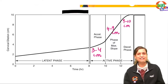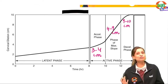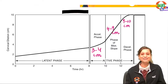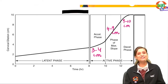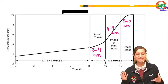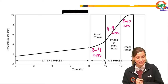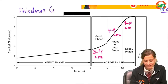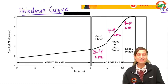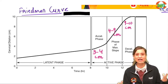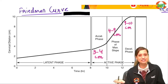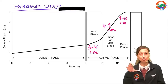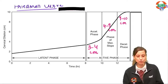I would appreciate if you write these concepts simultaneously — it helps retain things longer, otherwise you just become PDF collectors. Nitish Rai gave the correct first answer: this is the Friedman's curve. What Friedman did was plot labor of various women, extrapolated the data, and got this S-shaped curve. There are certain labelings I need you to know before we move to the newer and latest versions.